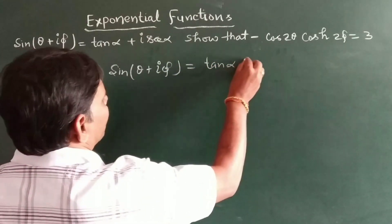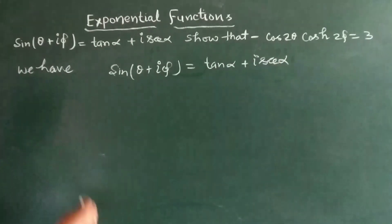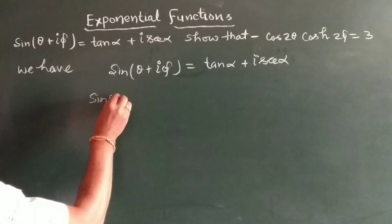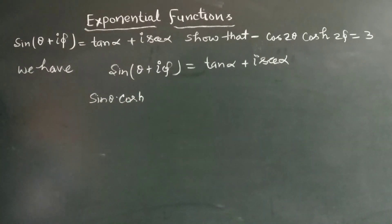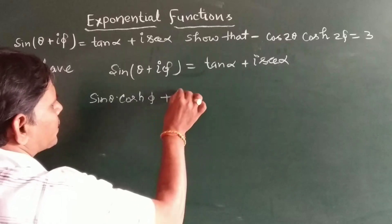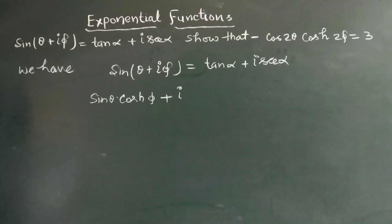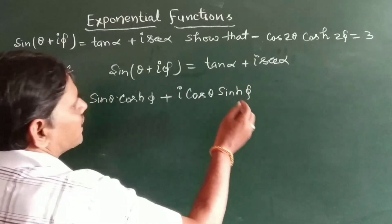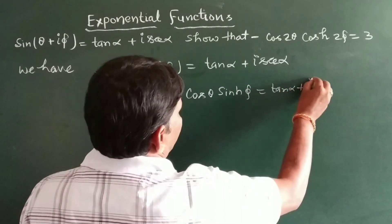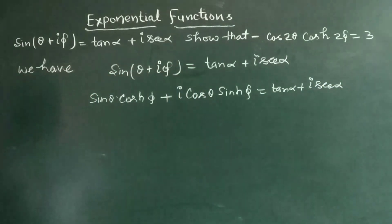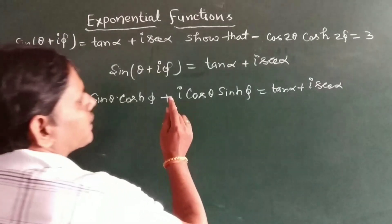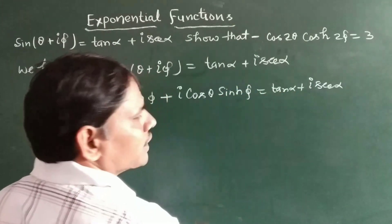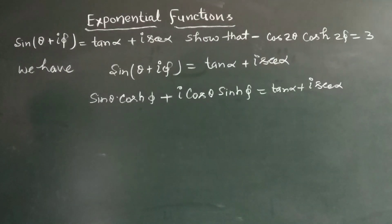Here we may write sin θ·cosh φ + i·cos θ·sinh φ is equal to tan α + i·sec α. Now we see that here is the real part and here is the imaginary part, equating both sides' real and imaginary parts.